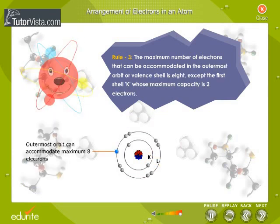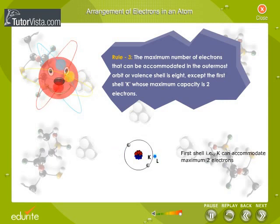Rule 3: The maximum number of electrons that can be accommodated in the outermost orbit or valence shell is 8, except the first shell K, whose maximum capacity is 2 electrons.